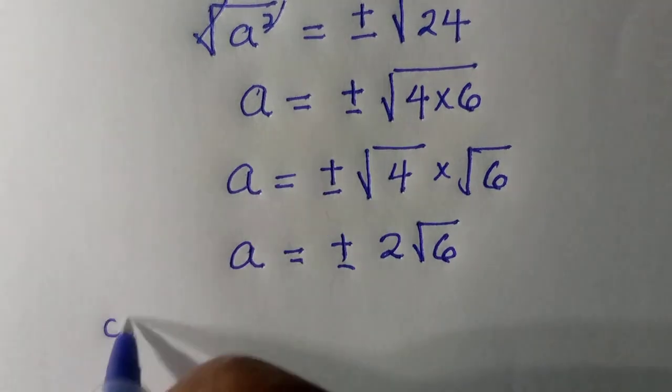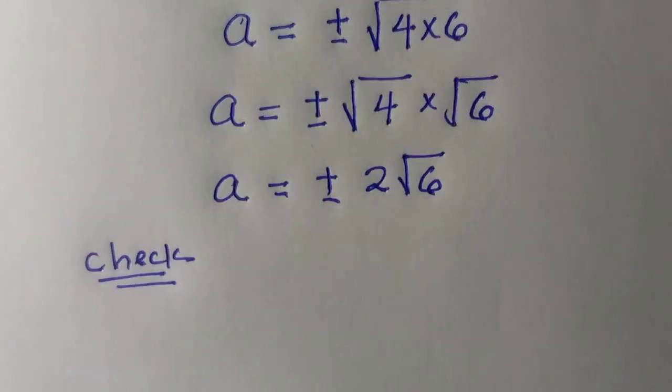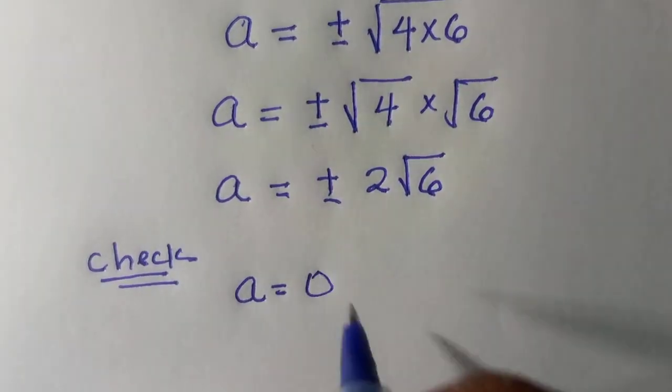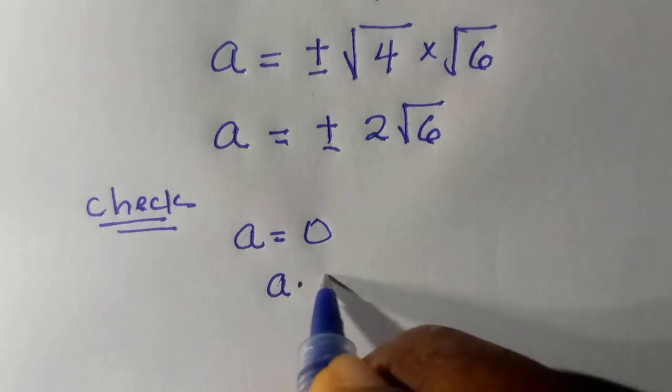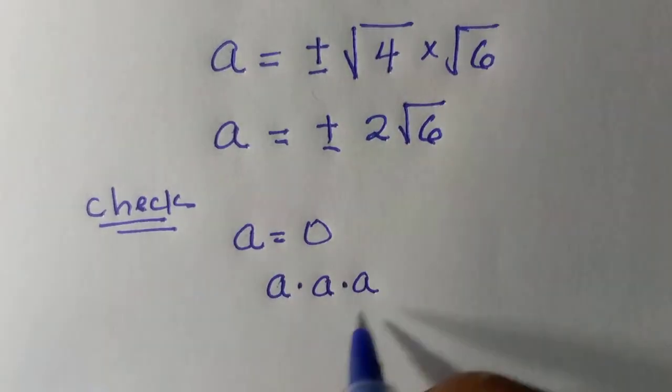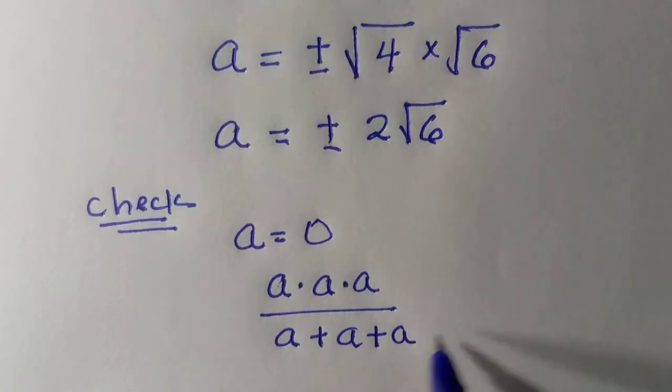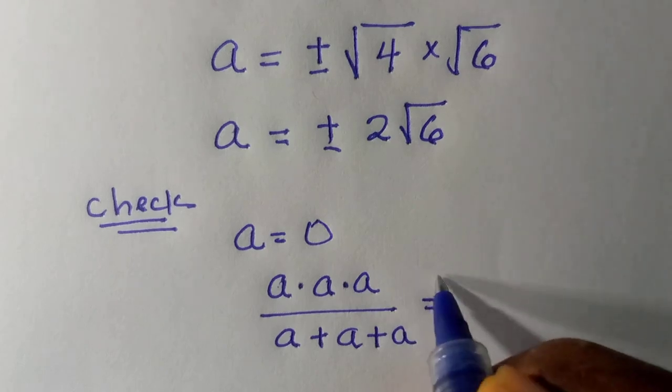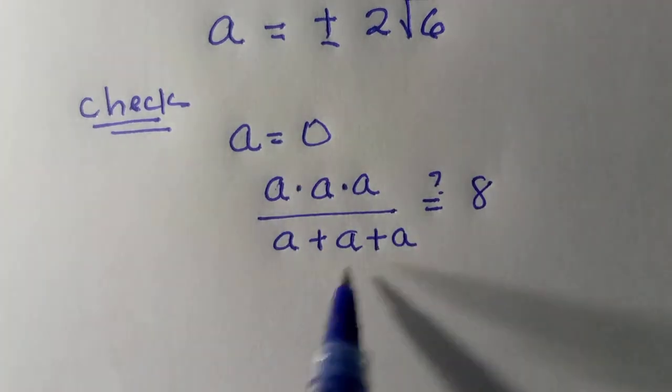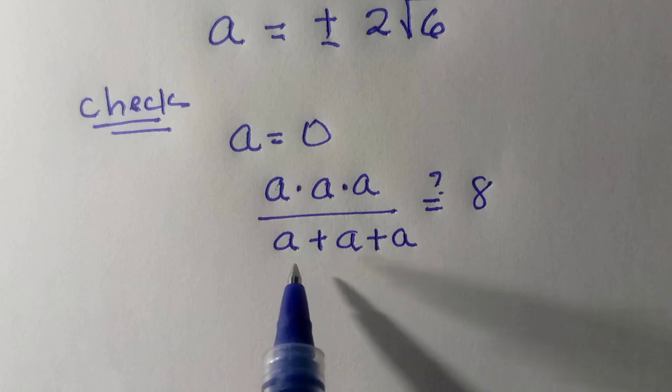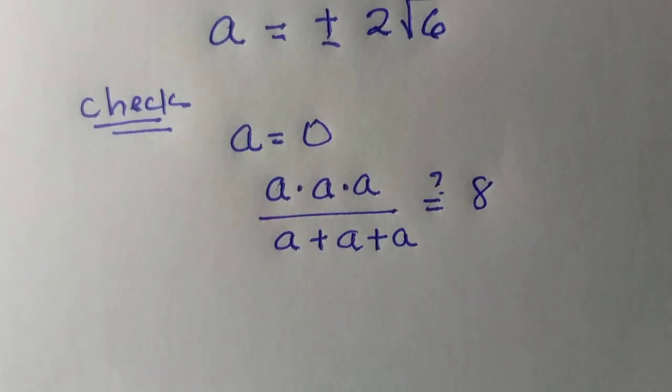Then we are going to check if all these three solutions satisfy this problem. So for the first one, at a equals 0, we input it here, so that we have a multiplied by a multiplied by a, divided by a plus a plus a. We want to check if this is truly equals 8. And obviously, when we substitute the value of 0 here, we get the left-hand side as indeterminate, which means the first solution at a equals 0 is not true.